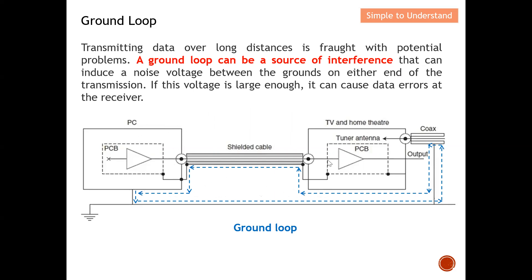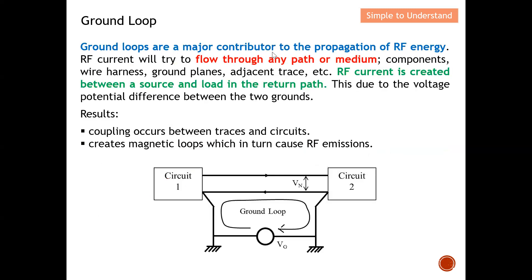Looking at this diagram — here we have a transmitter and a receiver linked by a shielded cable. They have a grounding issue, and you can see that they basically create a ground loop without us knowing. The ground loop is linked from the transmitter to the receiver by the shield cable, because at the outer part of the cable there is a conductor material, and this conductor material can potentially create a ground loop. Once we have this ground loop, we have an EMC issue.